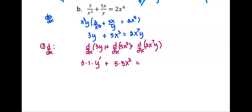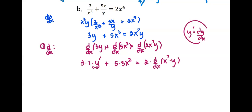For the last term on the right-hand side, we take the constant multiple 2 times the derivative of the product x to the seventh times y, which requires a bit more work. Note that y prime is dy by dx, the quantity we are looking for, so we can use that notation. We simplify 5 times 3 to get 15x squared on the left.